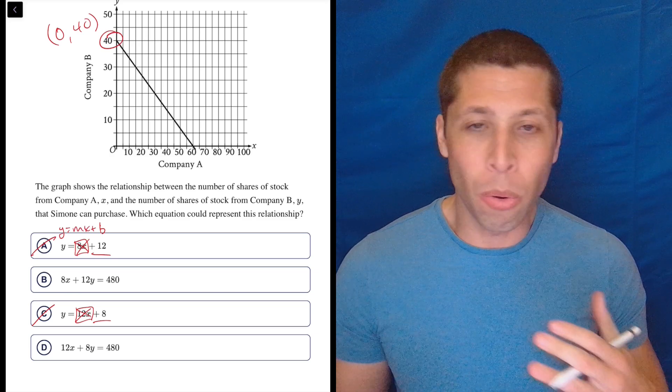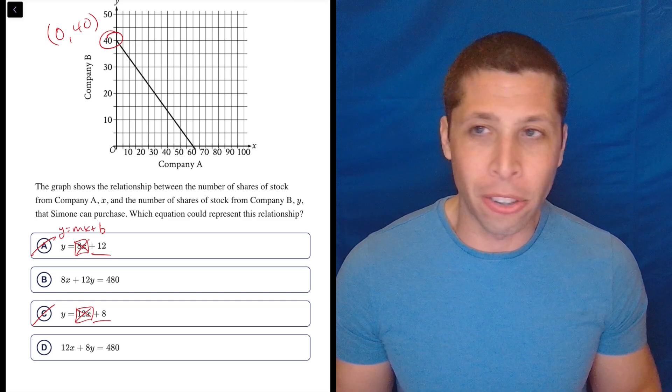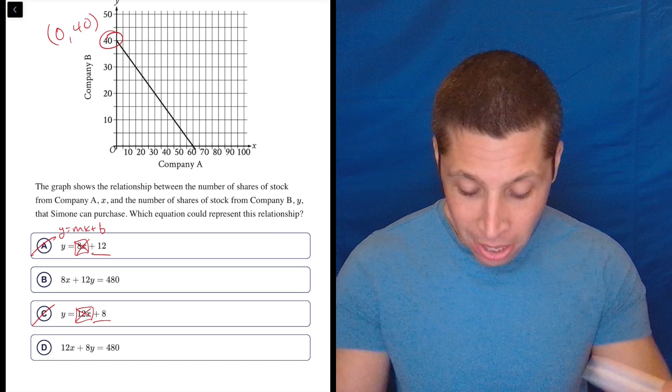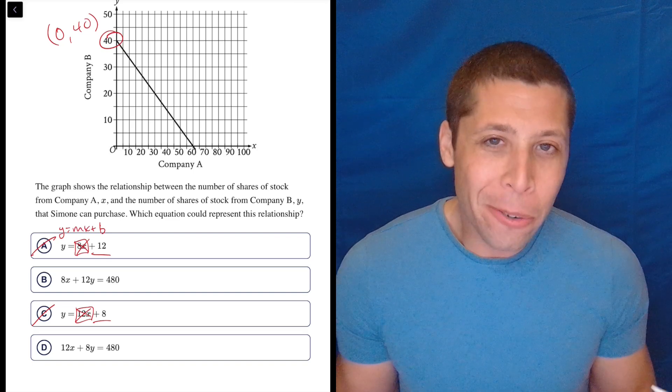But the other versions are not written in Y equals MX plus B, but a lot of you are going to do all sorts of really stupid things here or just waste your time. Don't rewrite this into Y equals MX plus B. Don't put it in Desmos. The point works no matter what the equation looks like.